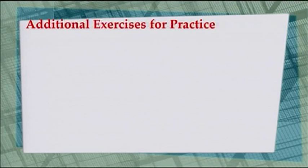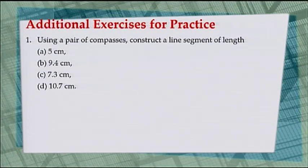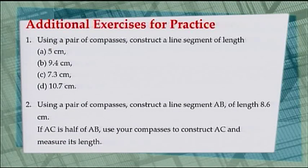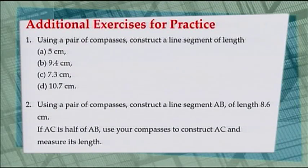Here are a few exercises for you to practice. Question number 1: use your pair of compasses to construct a line segment of length — first part, 5 cm; second part, 9.4 cm. For the second question, if AC is half of AB, use your compasses to construct AC and measure its length.